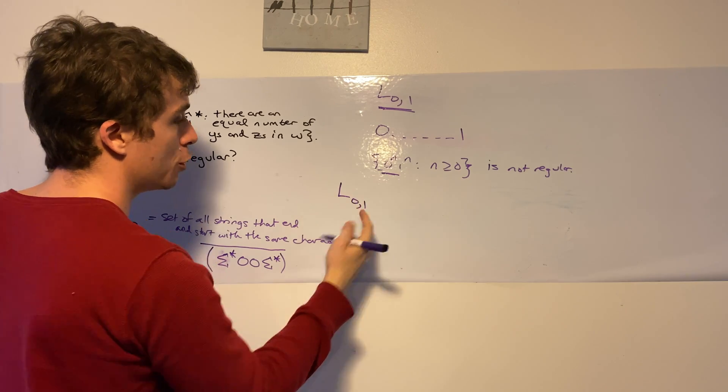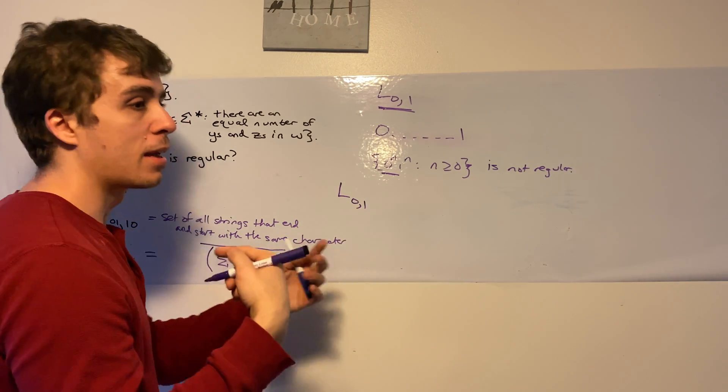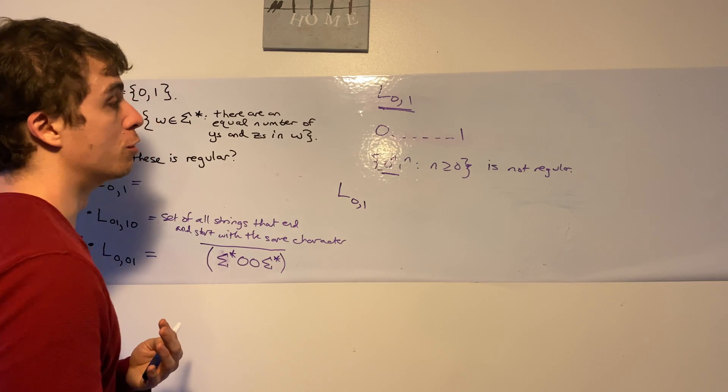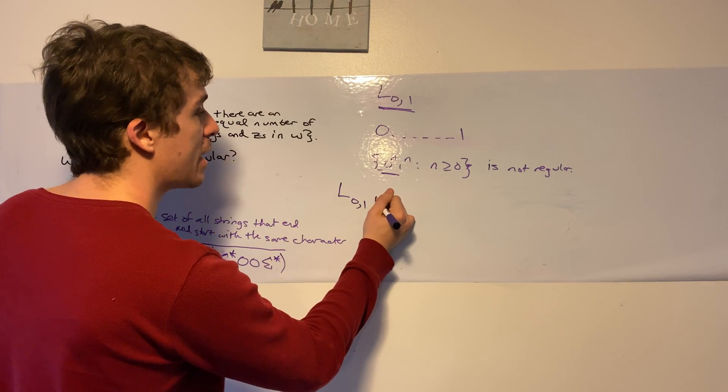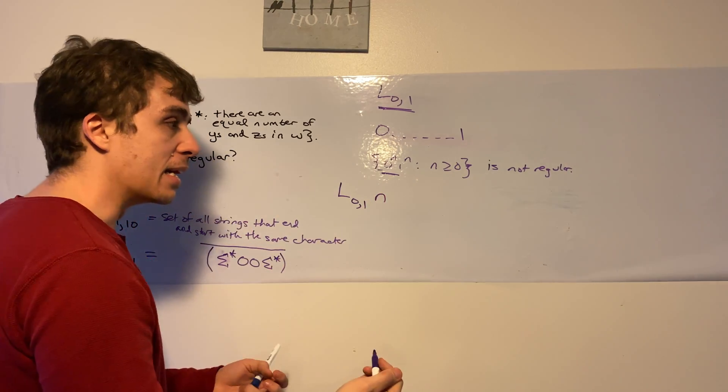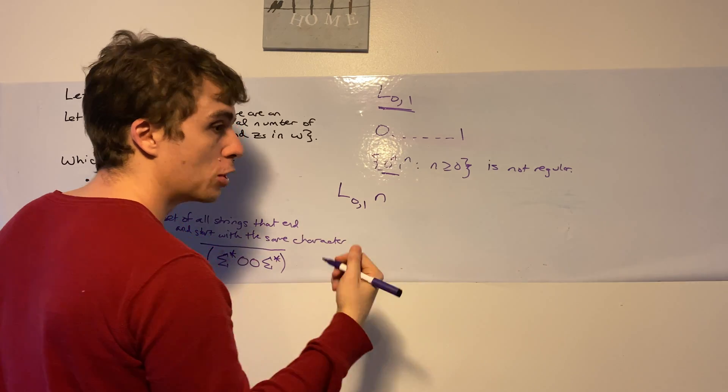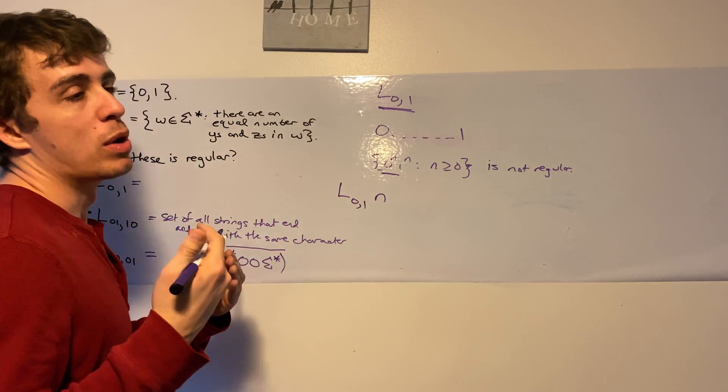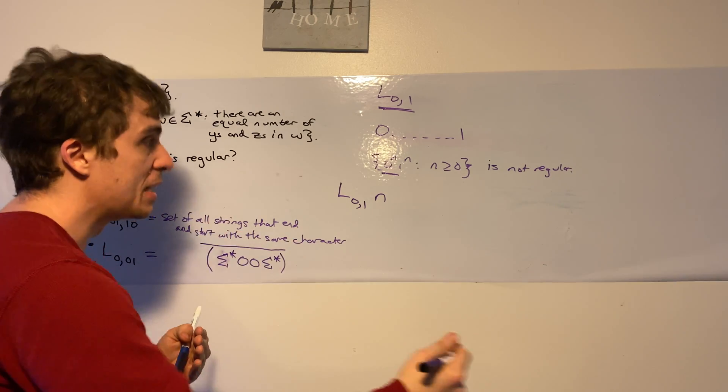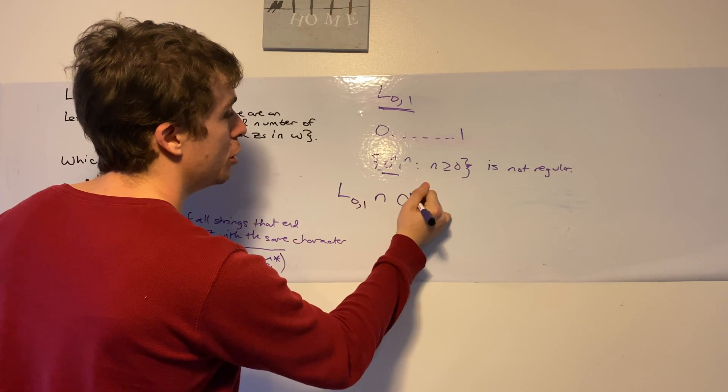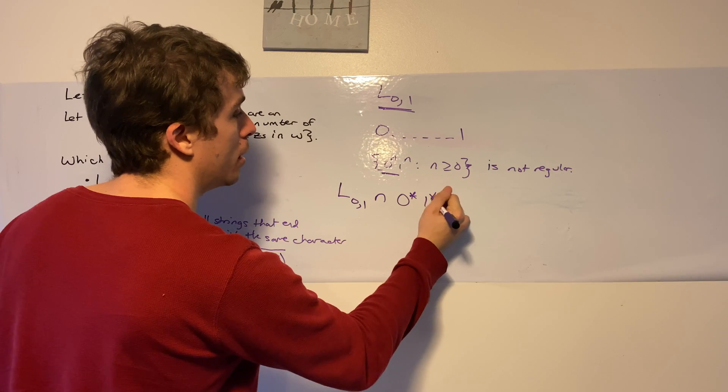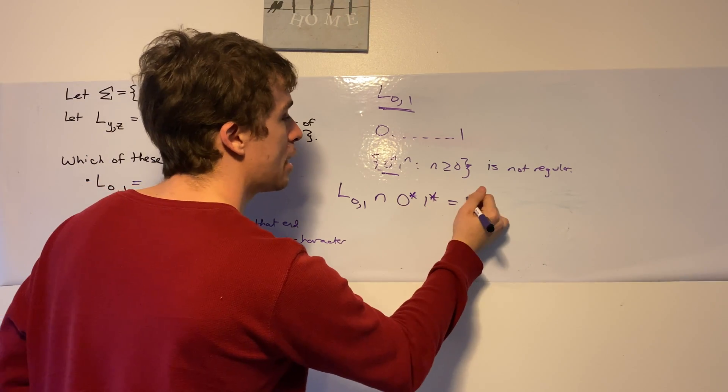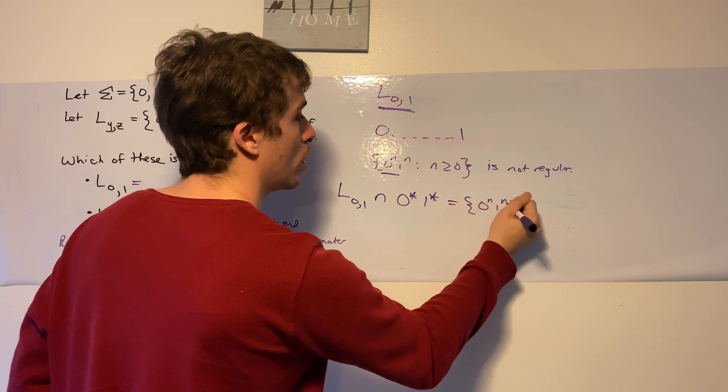We can write it like this. So we take the original language with any string with the same number of 0s and 1s, and we intersect it, and the 0s have to come first and then the 1s. The set of all strings with 0s coming first and then 1s after it is 0 star 1 star. And this is equal to 0 to the n, 1 to the n.